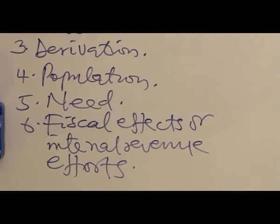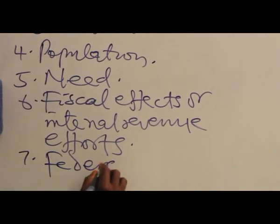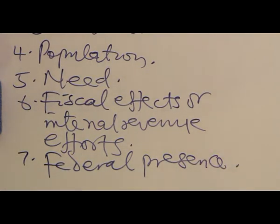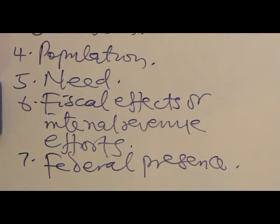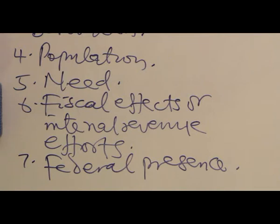Seven, federal presence. This depends on federal government investment in a state. The less the federal presence, the less the revenue from this criterion. For example, the federal capital territory of Nigeria receives an amount of money from the revenue allocation yearly because of federal presence in Abuja.